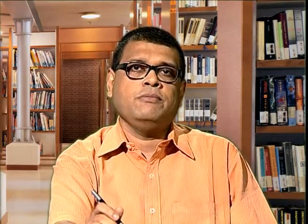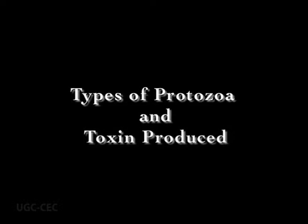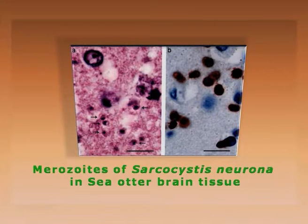At the outset, we will consider the different types of protozoa and the toxins produced by them. Protozoans can be free-living, opportunistic pathogens, or vector-borne. One of these protozoa is Sarcocystis neurona, which is the organism causing the dreadful disease in the brain of the sea otter.